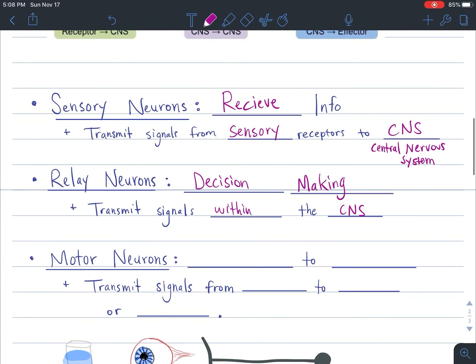And then lastly, we have our motor neurons. Motor neurons respond to a stimulus. So if you feel a hot candle flame, your body will activate the motor neurons to contract your muscles to pull your arm away from the flame. So here we can say that they transmit signals from the central nervous system, from our brain, to our muscles or our glands.